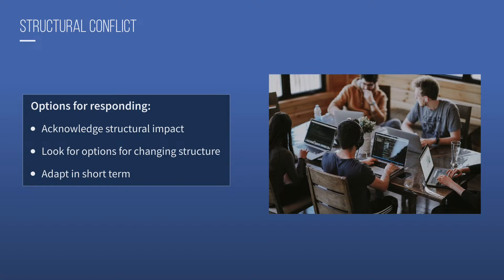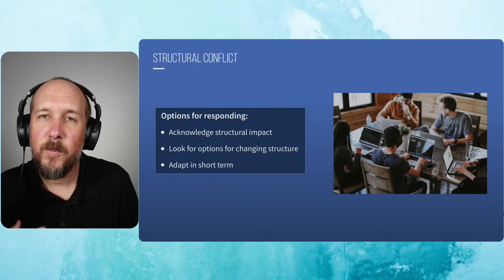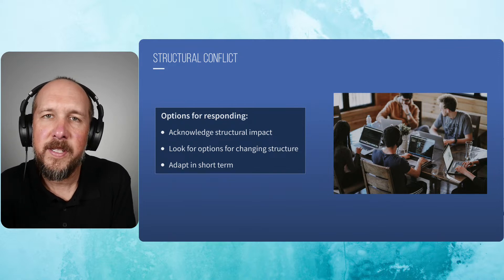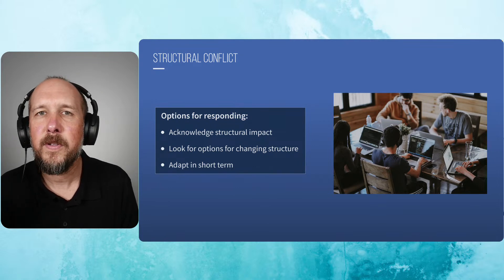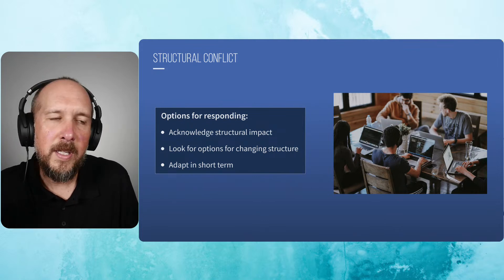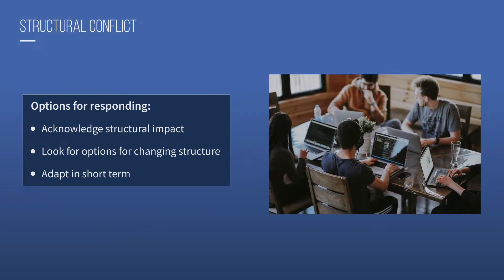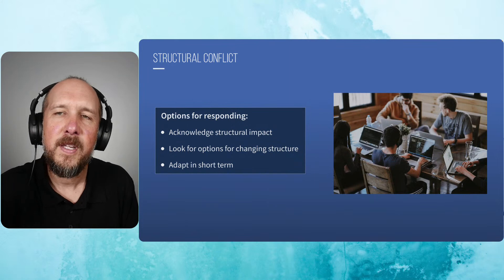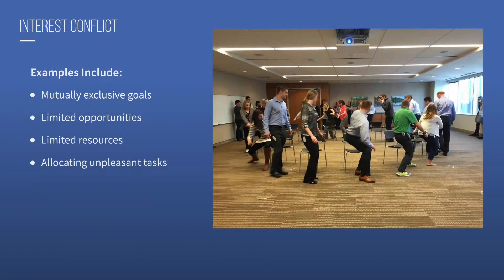The way to respond to structural conflict is often to change the structure, and to acknowledge the impact it's having. We could say something like: 'Look, it's not the fault of either of you — the fact that you've got two different areas of responsibility with no easy way to communicate about them may have put you in a position where this was never going to work. What I'd like to do is talk with you both and find a way to adjust some of that structure.' We look for options for change, and at least in the short term look for ways to adapt. Clarifying short-term expectations significantly increases the chance of trust being rebuilt.